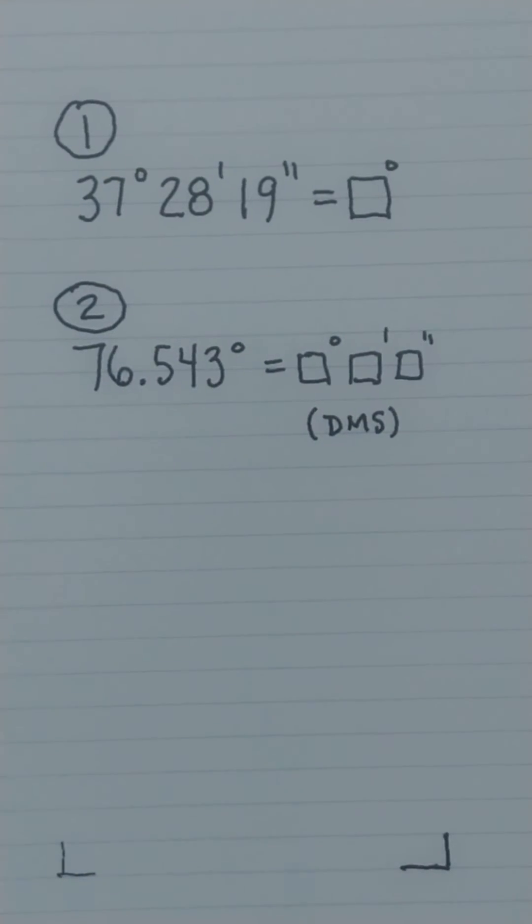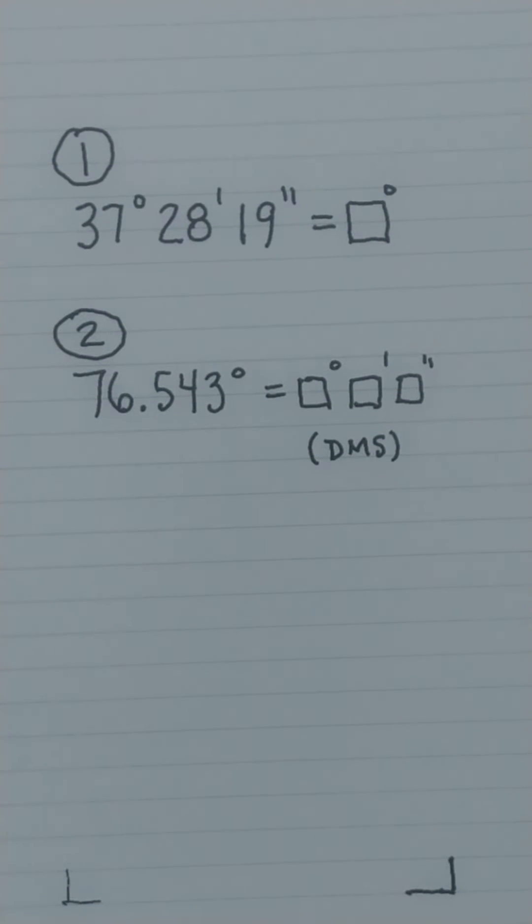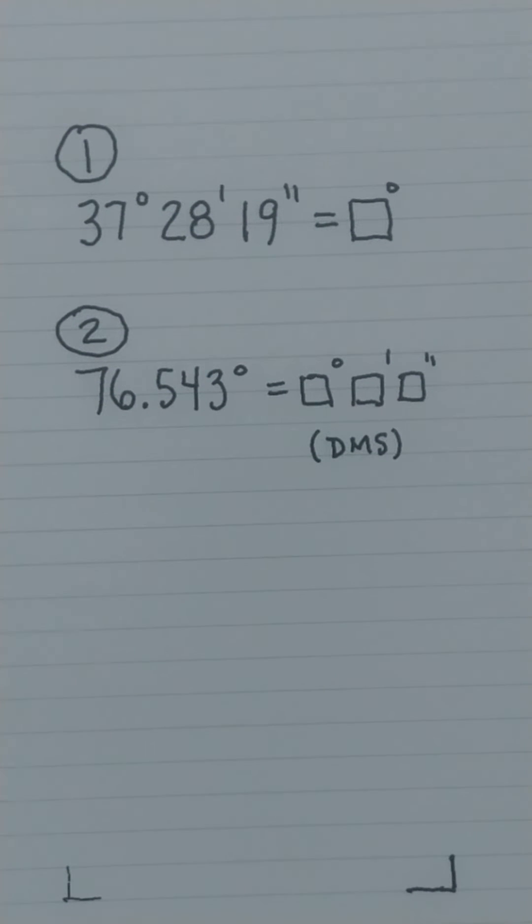Now we're going to go the other way. Let's say we want to change 76.543 degrees into degrees, minutes, seconds. Sometimes you'll see that abbreviated as DMS.